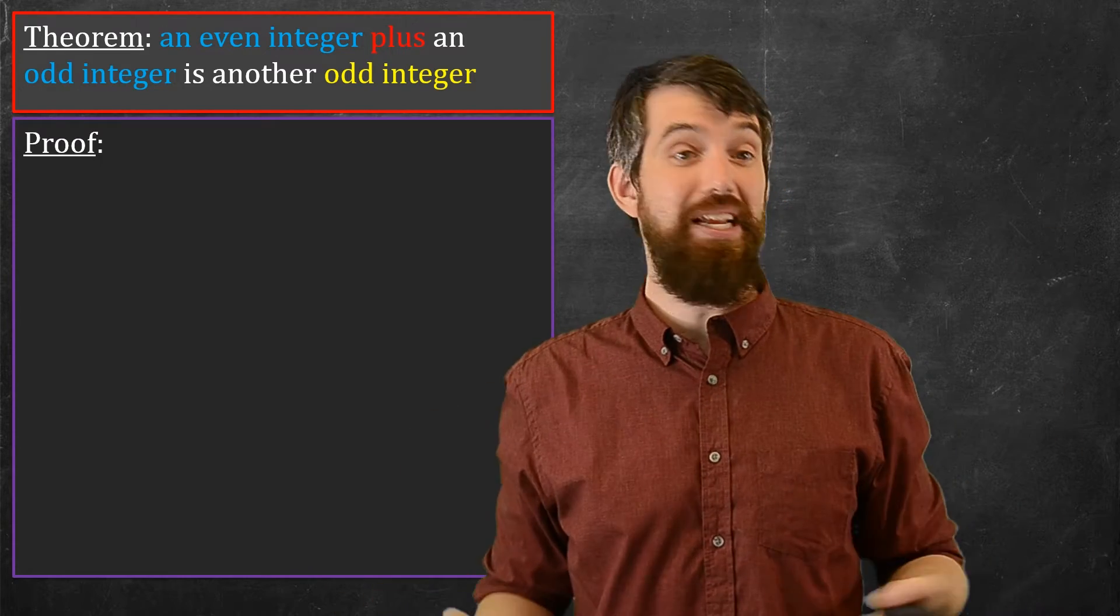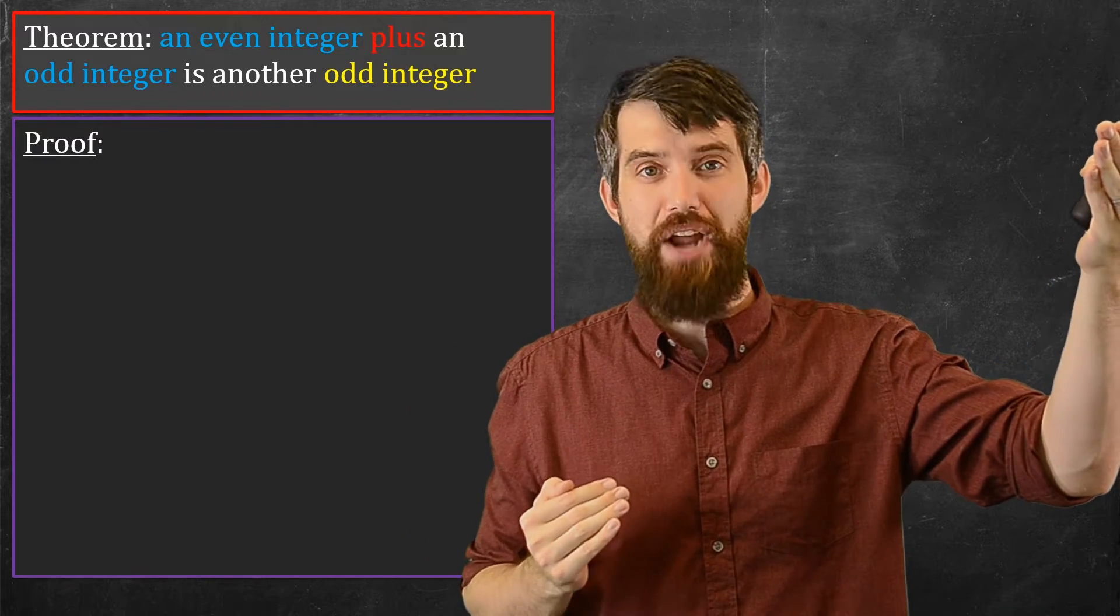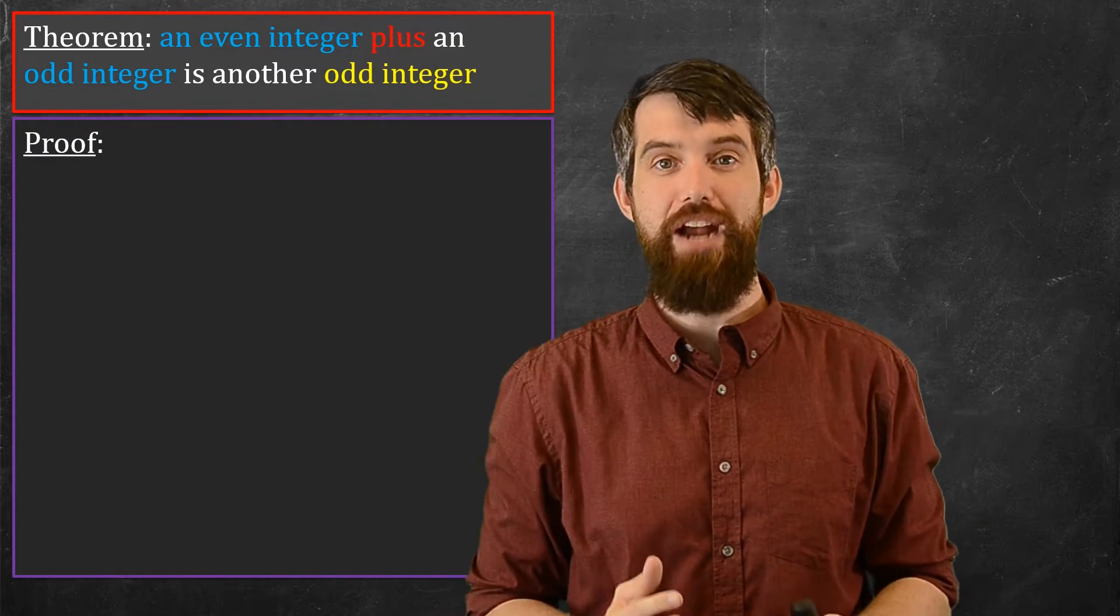And so when you read it, everything makes sense. You start with what you're supposed to assume, and you do various manipulations, and you get to what you're trying to conclude. That is how you do a direct proof.